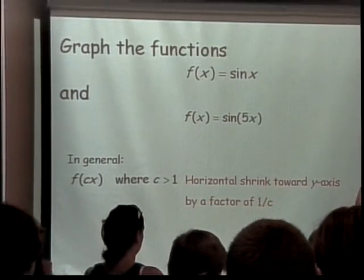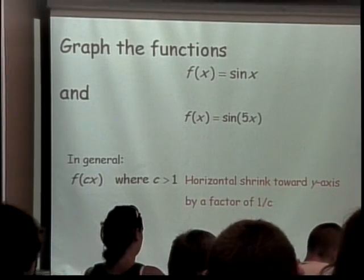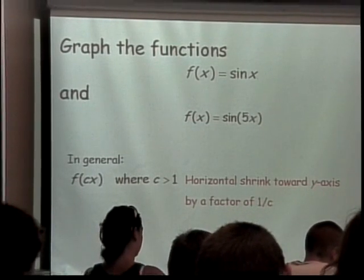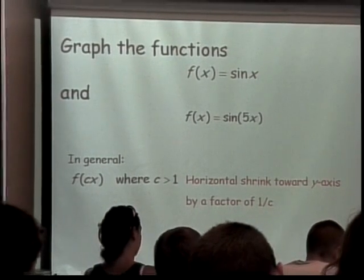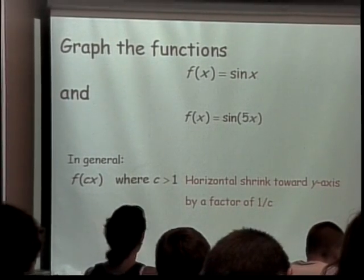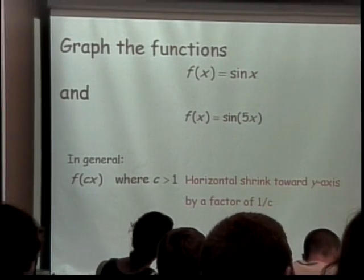So it's a horizontal shrink toward the y-axis by a factor of one over that number. So it shrunk it by a factor of one-fifth. In other words, where our screen came up with two ups and downs, our screen now comes up with five times as many ups and downs. An up and down only now takes a tenth of the screen instead of half a screen.